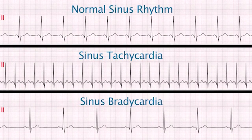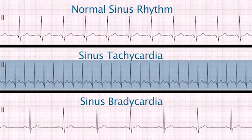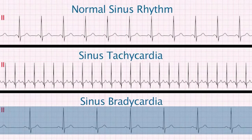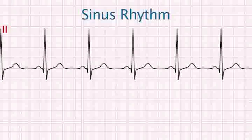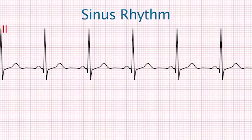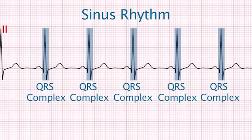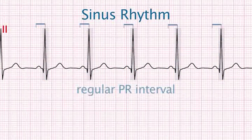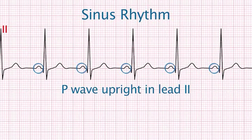We'll first start with rhythms originating in the sinus node: normal sinus rhythm, sinus tachycardia, and sinus bradycardia. Characteristics of all sinus rhythms are: there is a P wave preceding each QRS complex, there is a regular PR interval, and the P wave is upright in lead 2.